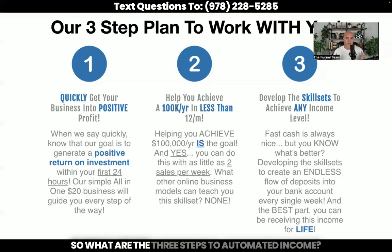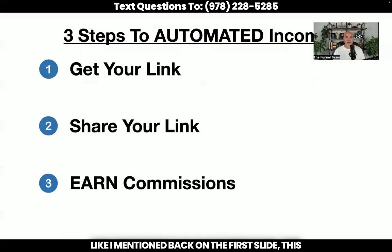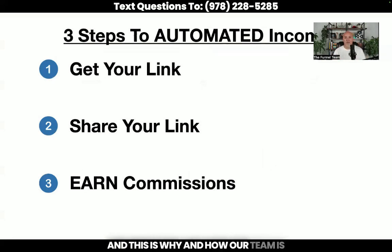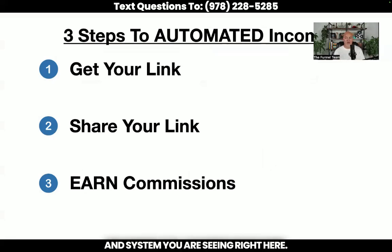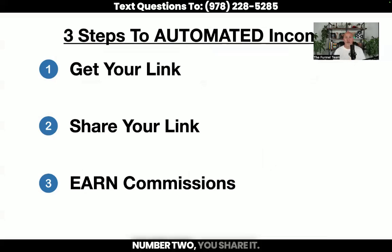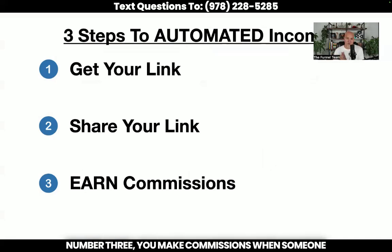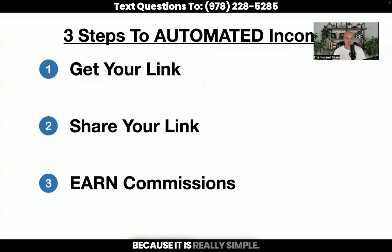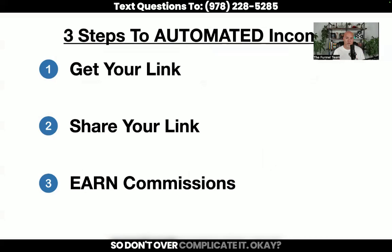So what are the three steps to automated income? This is as simple as it gets. Number one, you get an affiliate link with MyEcon. Number two, you share it. Number three, you make commissions when someone goes to your link and gets started. It doesn't have to be complicated — don't overcomplicate it. This is how we're seeing so much success on our team, because we keep the process really simple.